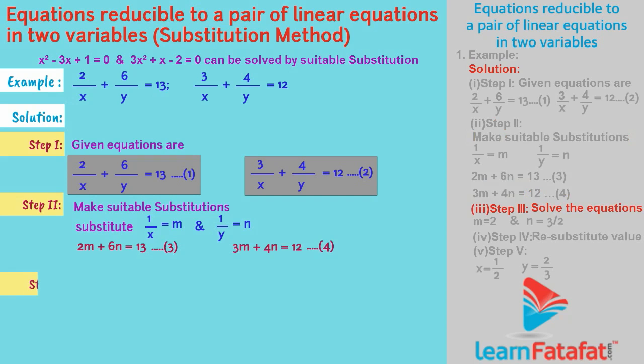Step 3: Solve the simultaneous equations. Multiplying equation 3 by 3 and equation 4 by 2, we get: